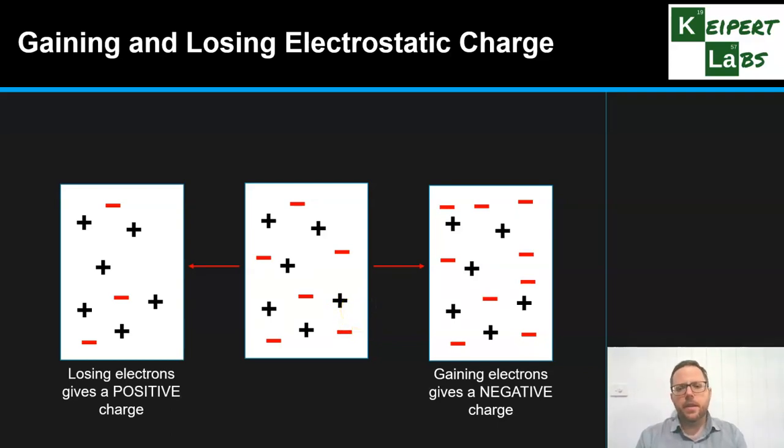Notice, for each of these little rectangles that's drawn there, they still have the same number of plus signs or positive charges, but the electrons, the red minus signs, are the things that can be lost or gained. And as they're lost or gained, they give this object that overall charge, positive or negative, depending on exactly what has happened.